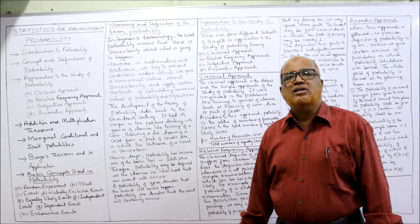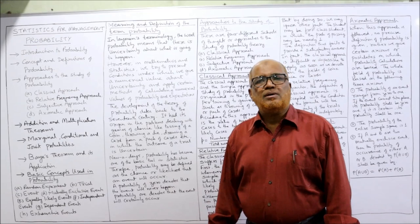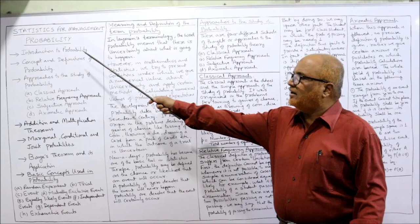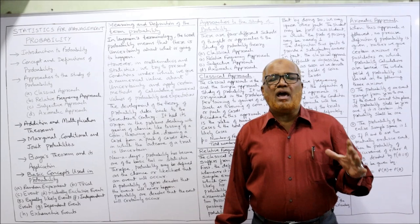The basic concepts used in probability include: random experiment, trial, event, mutually exclusive events, equally likely events, independent events, dependent events, and exhaustive events. In the next video I'll explain all these concepts. Before proceeding, take a screenshot of the points I have written on the board, then I'll explain every point in detail.